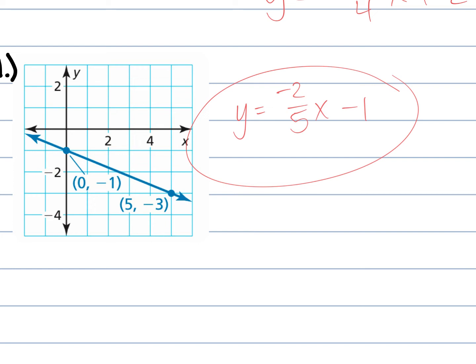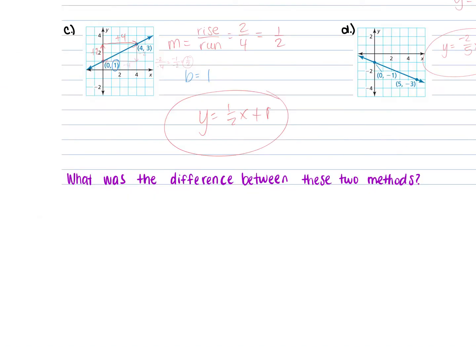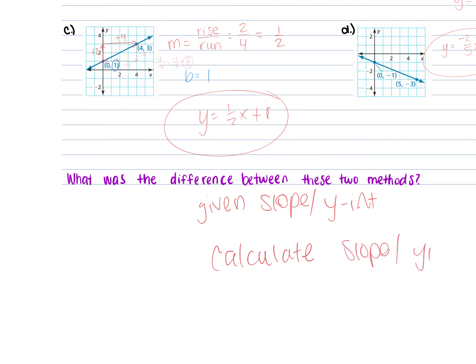The answer to D is on the board — check what you got and discuss for 30 seconds. Let's talk about the two methods: the first examples were super easy, the second got more difficult. Why, Natalie? Very good — the first examples gave us the slope and y-intercept already. In the second ones we had to calculate it. Make sure you know the difference between those two methods.